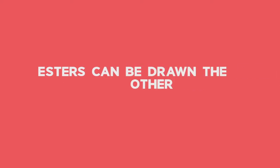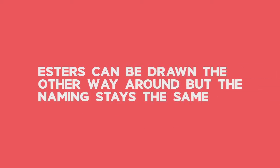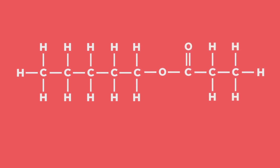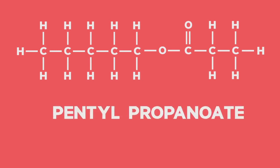Esters can be drawn the other way round, but the naming stays the same. Let's try another one. In this example, our alcohol side contains five carbons, and our carboxylic acid side contains three carbons. The name of this ester is pentyl propanoate.